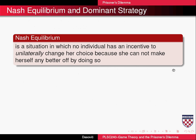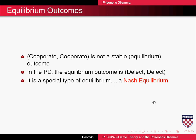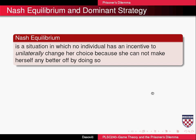What does Nash equilibrium mean? A Nash equilibrium is a situation in which no individual has an incentive to unilaterally change her choice, because she cannot make herself any better off by doing so. In the prisoner's dilemma, there is no incentive for either individual, once in defect-defect, to unilaterally move to cooperate — because if Clyde were to move from defect to cooperate, he would end up worse off.